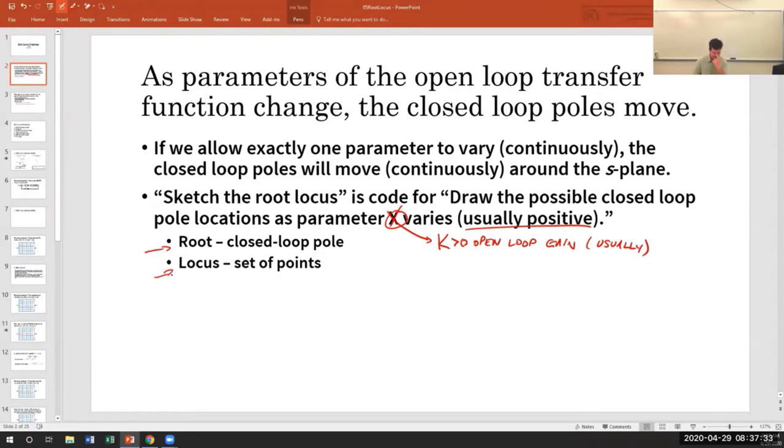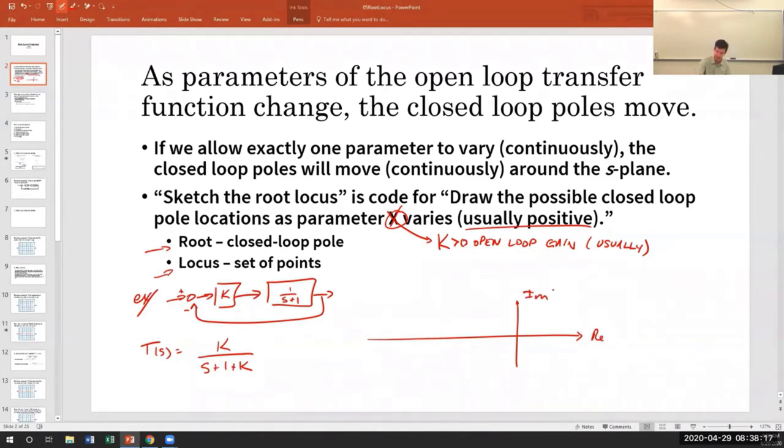So let's see if we can do a really simple one. So example, if I've got a proportional controller and a first order plant in negative feedback. What is the closed loop transfer function? Well, it's k over s plus 1 plus k. And so as k changes, the closed loop poles will change. The closed loop poles are generally complex numbers. So that's why these root locus diagrams are plotted on the complex plane.